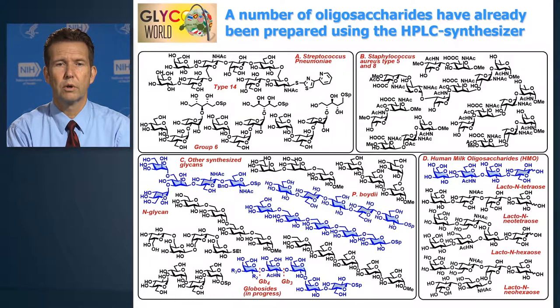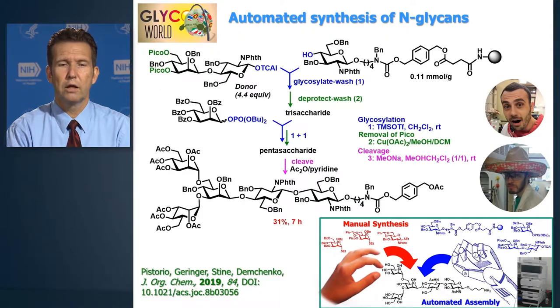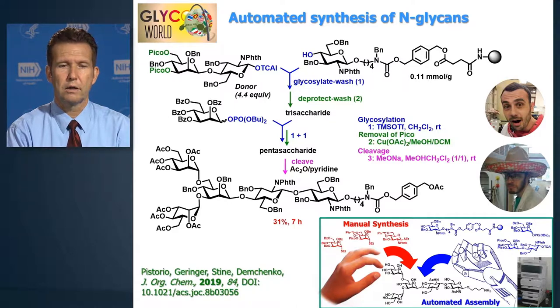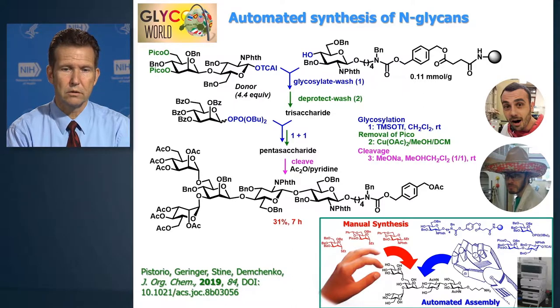Shown on the slide are numerous complex sugar structures, and to highlight the synthesis I'm going to show you a synthesis of N-glycans, which are important core structures in many glycoprotein molecules. These molecules have been synthesized in seven hours and 31 percent yield.